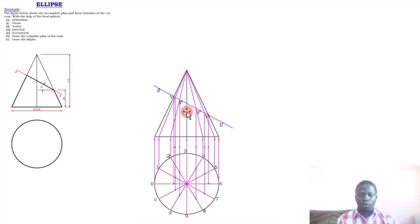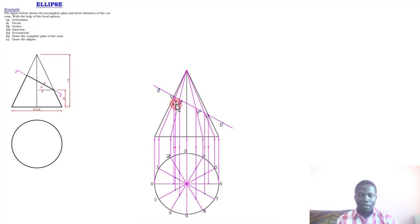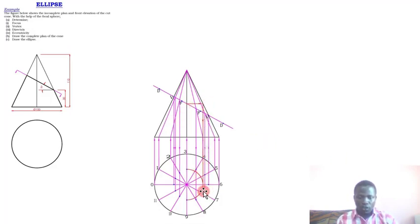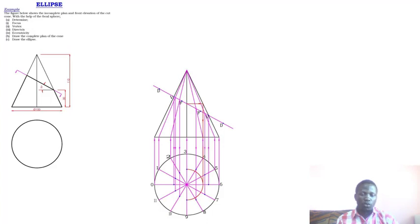For the missing points, use the procedure of projecting the line from that point to the surface and then downwards, then use your compass to obtain points for three and nine — shown by the red line. Project downwards, reach the base, use the compass, and you get those points needed to complete the plan.